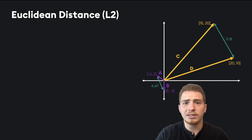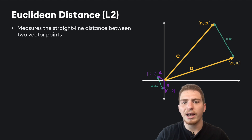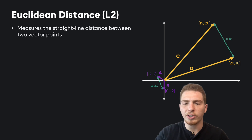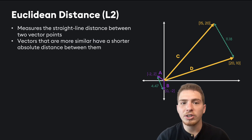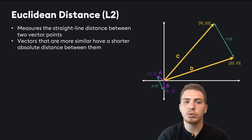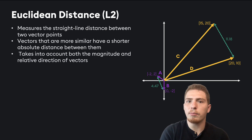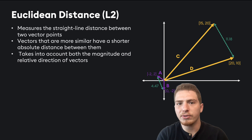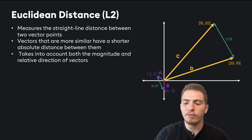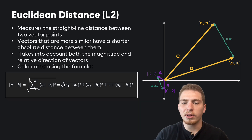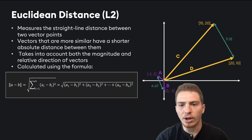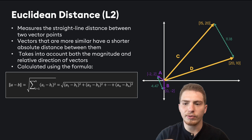Euclidean distance is a similarity metric that looks at the distance between vectors as the crow flies — the straight line distance between any two vector points. Vectors that are more similar are going to have a shorter absolute distance between them. This takes into account both the magnitude and the relative direction of the vectors. It's calculated with a formula that does a bit of trigonometry to find the straight line distance between vectors.